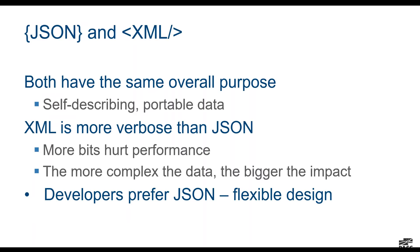JSON and XML both have the same overall purpose — the goal is that you should be able to read them. They're self-describing, portable data. This is data that is coming into play more and more in mobile and web contexts. XML is more verbose than JSON. Developers continually tell me they like JSON better. The more bits involved in the container of data, the worse the performance impact, especially in a mobile world. As data is transported back and forth, you want to keep it as concise as possible. The more complex the data, the bigger the impact XML's verbosity has.